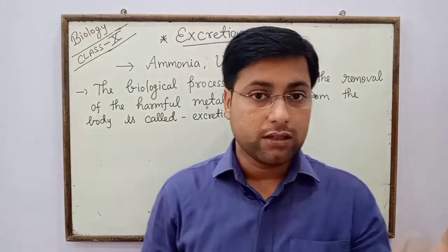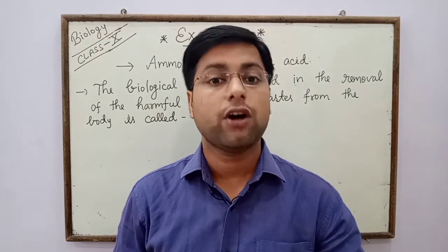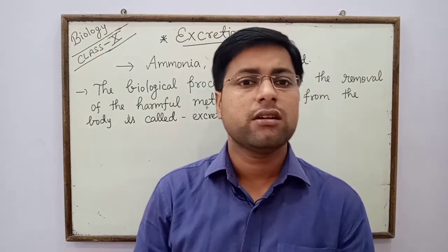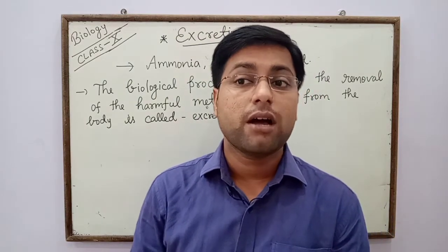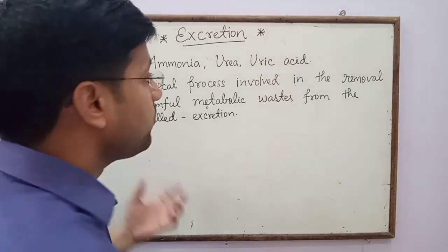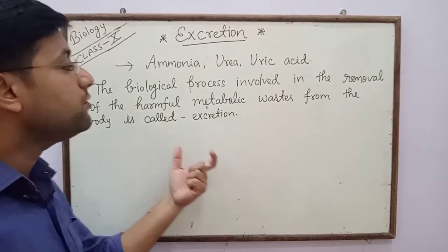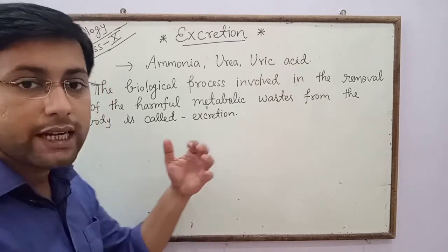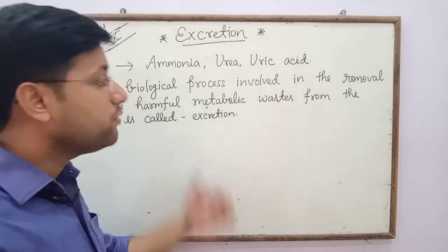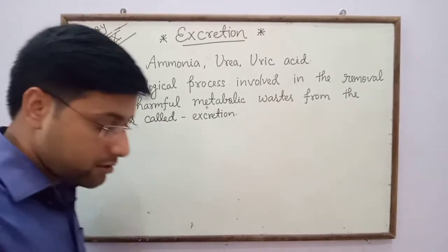So the elimination of all types of toxic substances — ammonia, urea, uric acid — outside of the body is called excretion. Excretion is actually a biological process: the biological process involved in the removal of harmful metabolic waste such as urea, ammonia, and uric acid from the body.